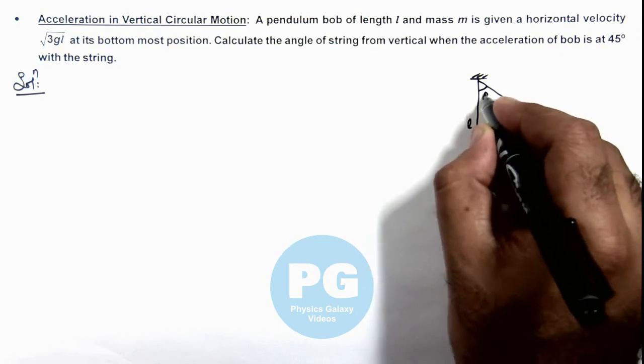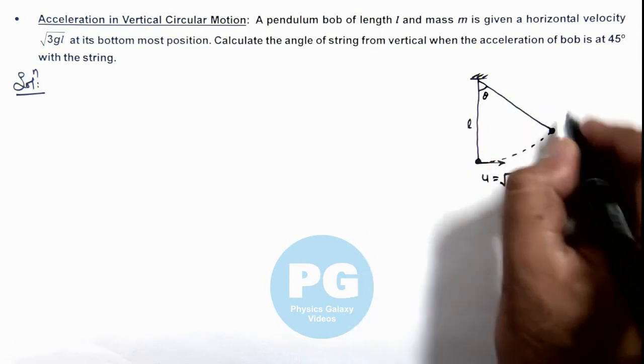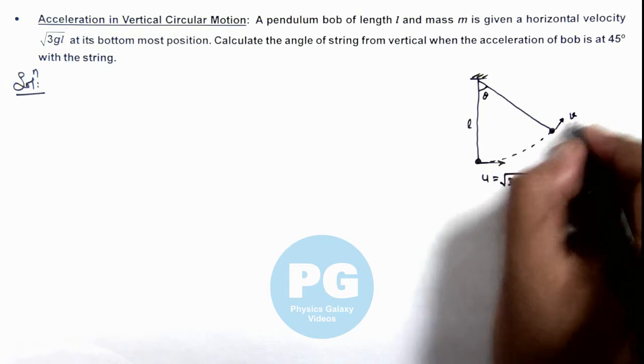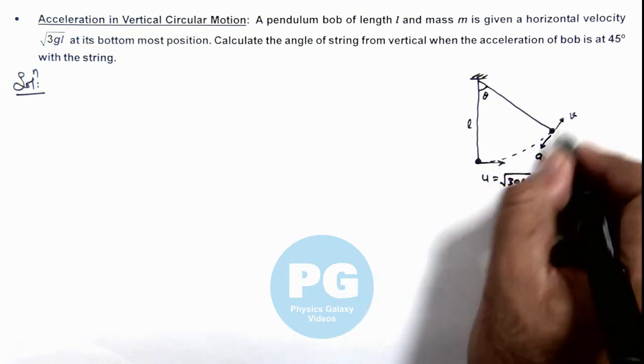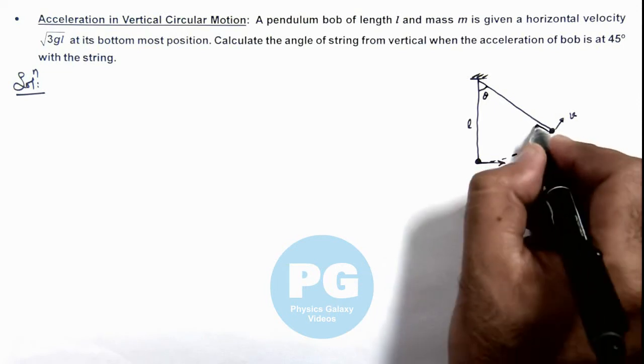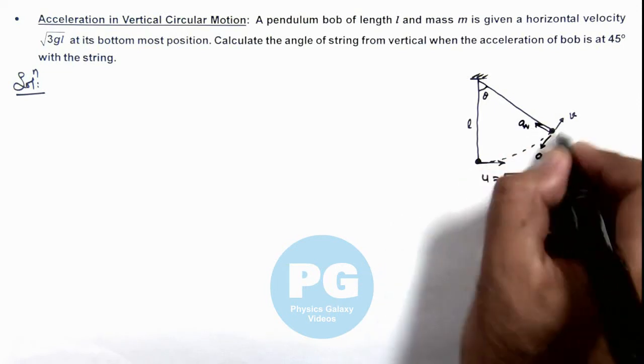Then we can say at an angle θ, if the speed is v, it'll be having one acceleration along the tangent of this circuit, and we can calculate another acceleration which is normal to the circle.